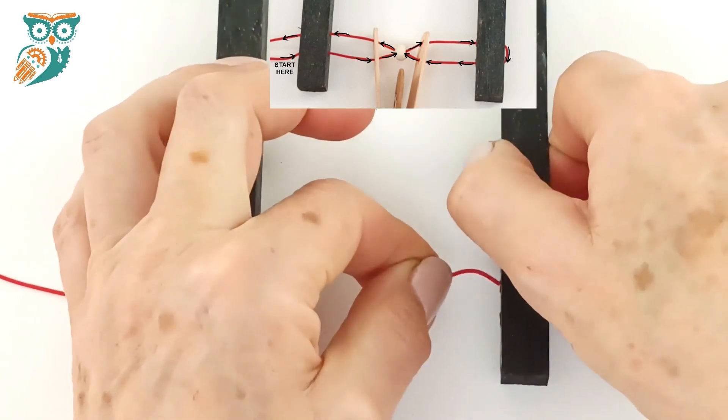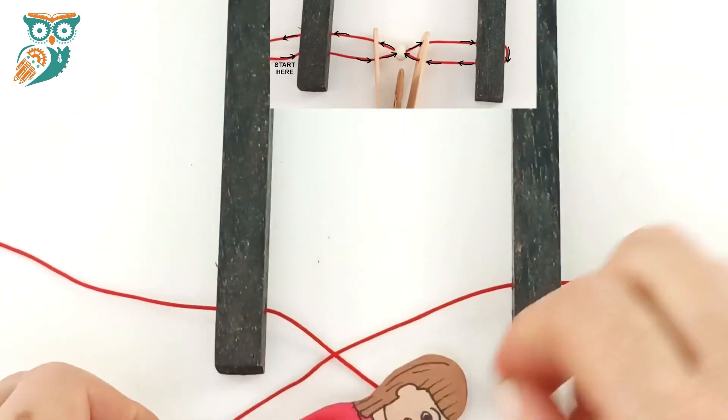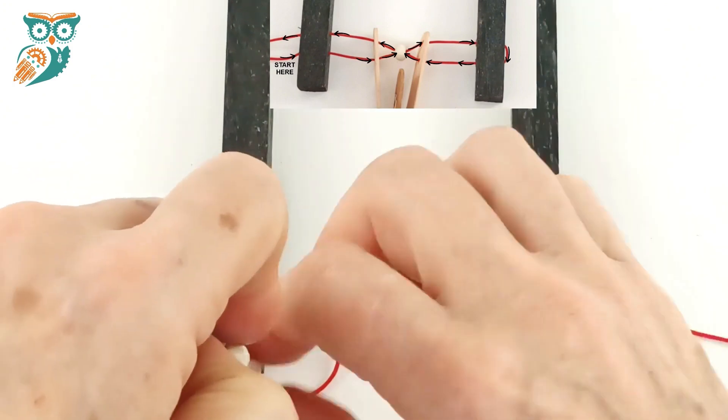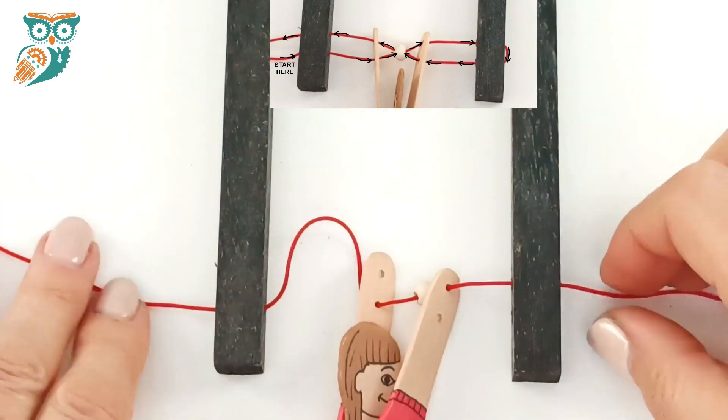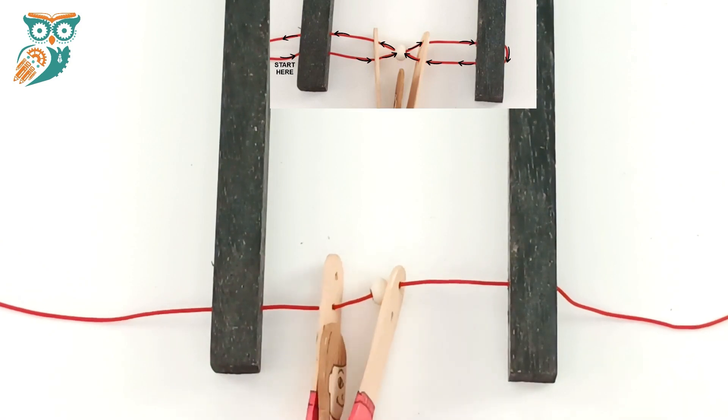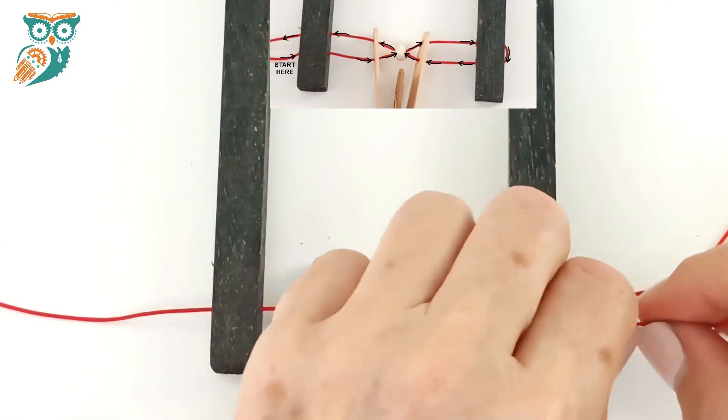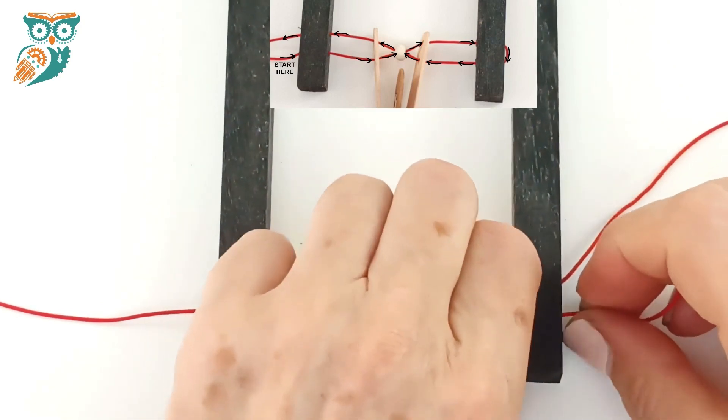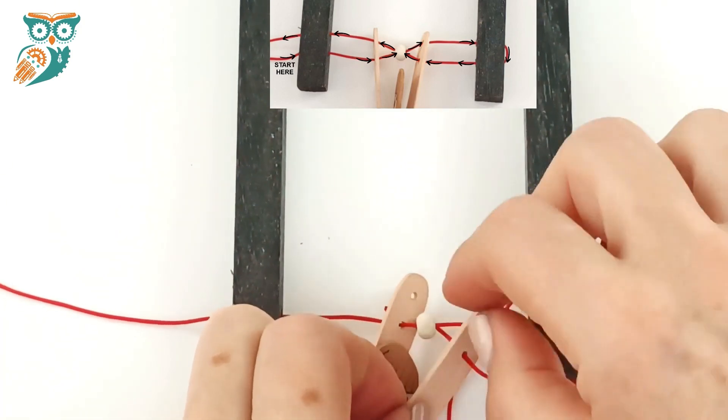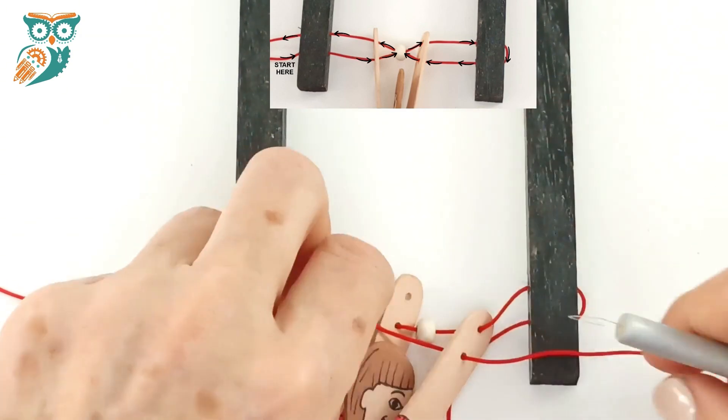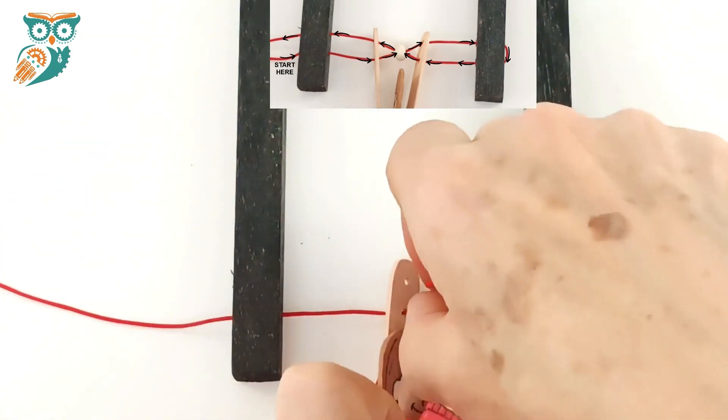We're just going to push that through there and it's really important you do this threading correctly so your acrobat will work properly. We're going through the frame there and now we're going to go back through the bottom hole on the right hand side. There you go, and we're going to go through the bottom hole of the right hand. And then this is where you need that needle threader and we're going to pull the thread back through that wood bead.